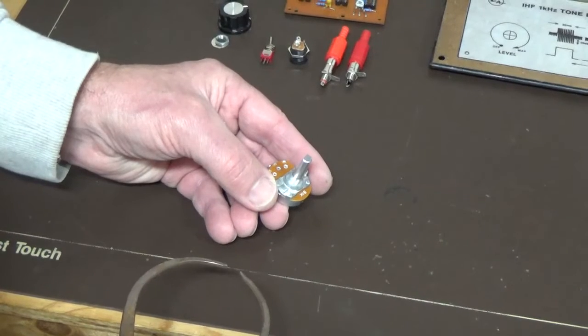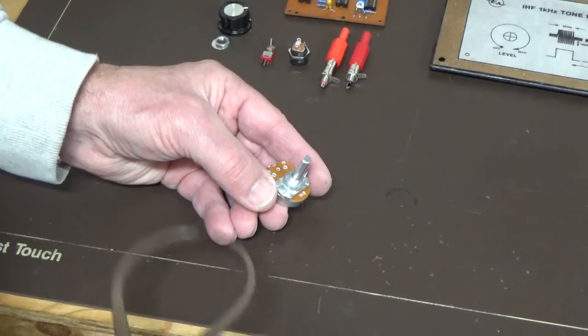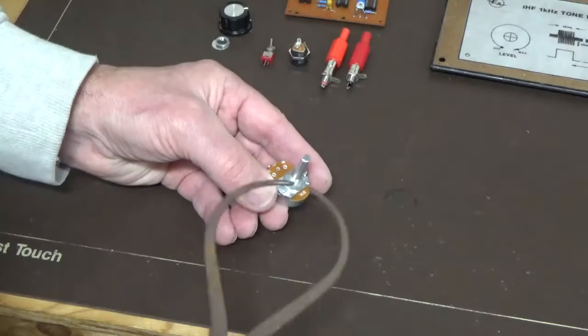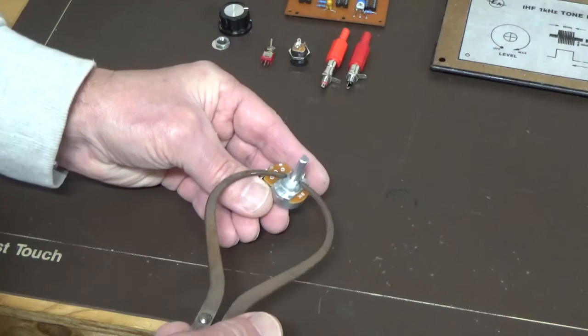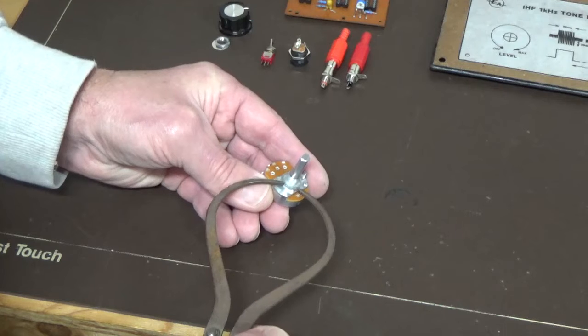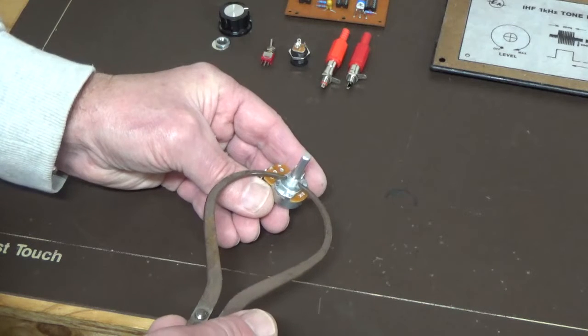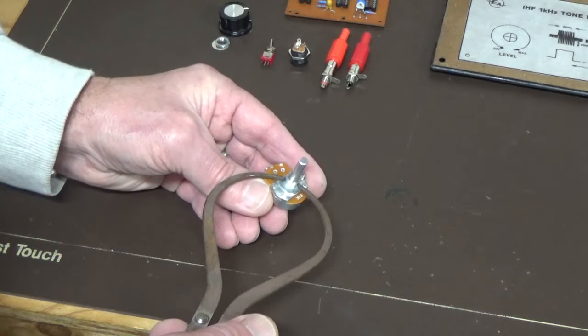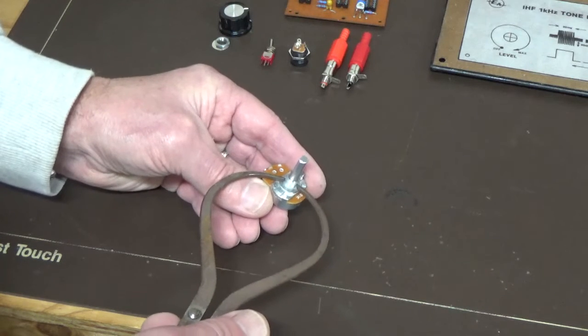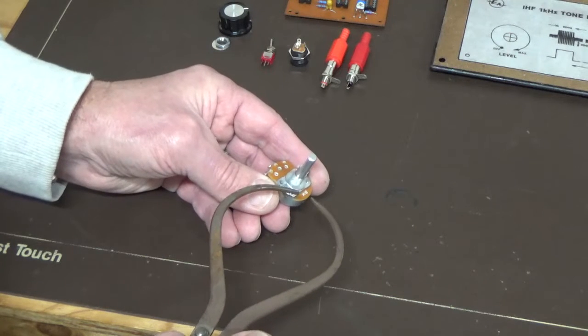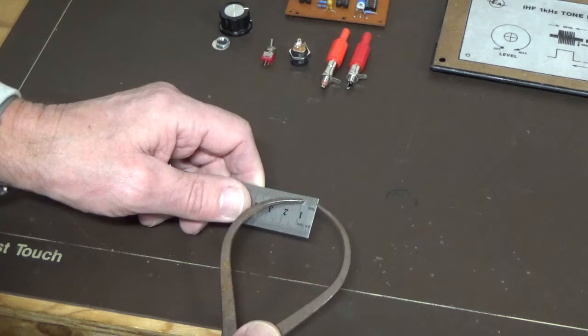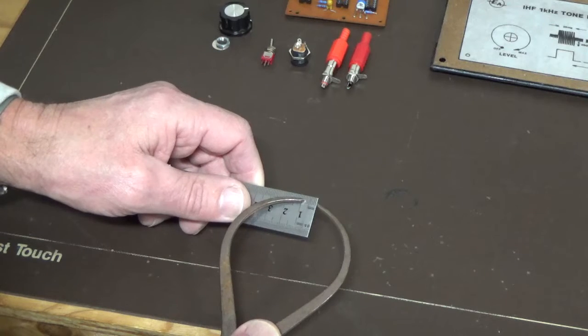So the first thing we're going to put on is the potentiometer, and we've got to get a measurement across this point here. I find the easiest way to do that is to get some inside calipers and just adjust them so you just get a slide fit. You can just feel a little bit of resistance, but it actually just moves through quite easily. Now I'll get a ruler and measure that. That's about 8mm, so we'll just go up to 8.5mm to give us a little bit of play.